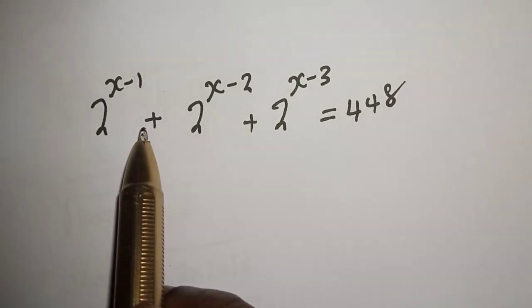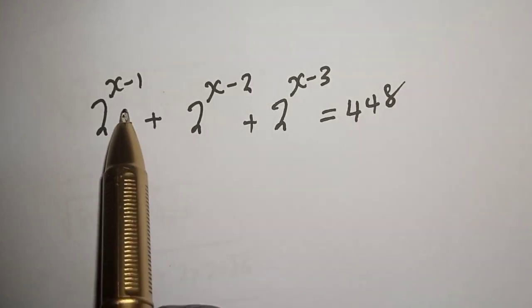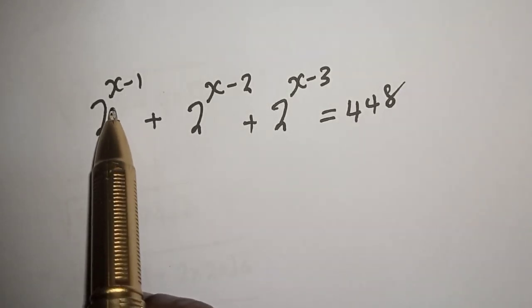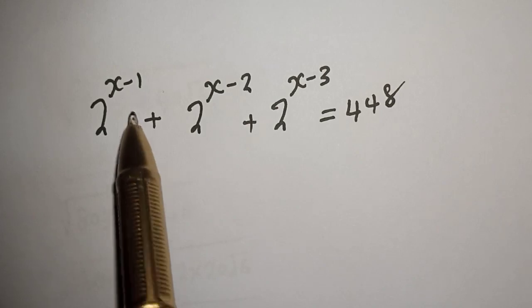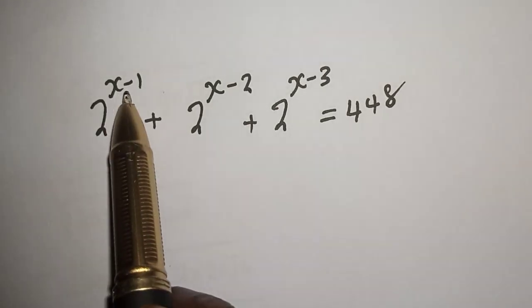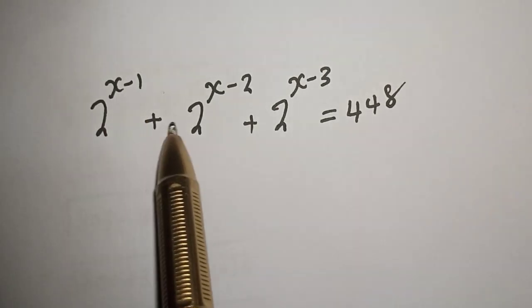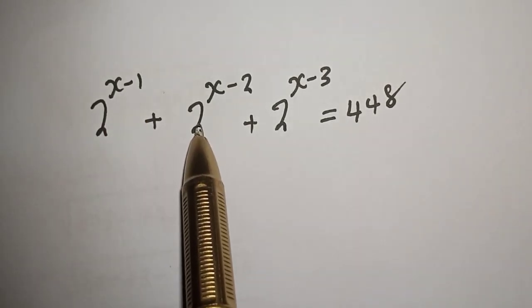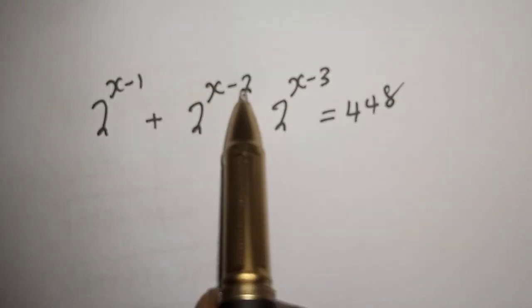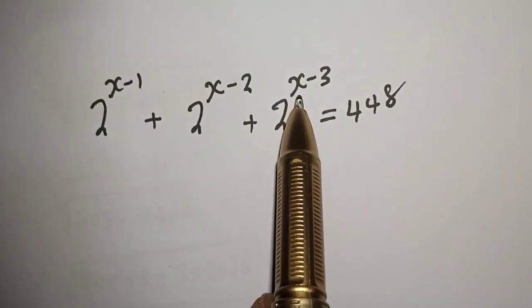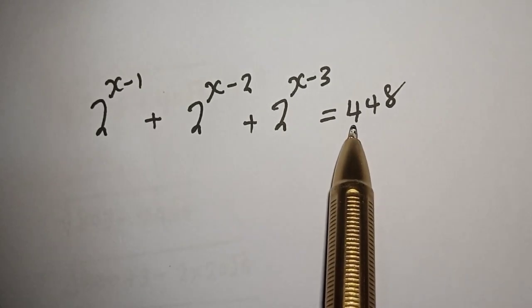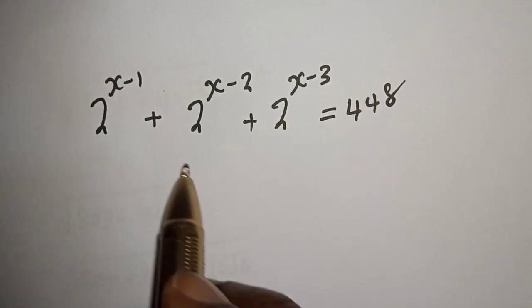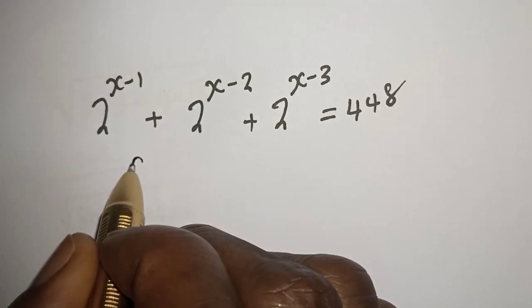Hello, welcome to Magist. In this class, I want to find the value of s from this beautiful exponential equation: 2 raised to power x minus 1, plus 2 raised to power x minus 2, plus 2 raised to power x minus 3, is equal to 448.